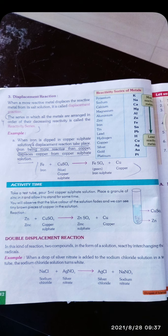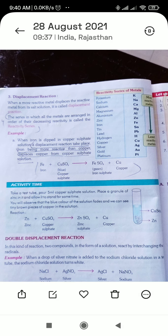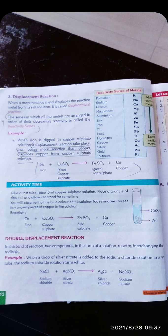par least reactivity mein aate hain. Almost yeh kisi tarike se reaction nahi karte hain. To definition form mein, a series in which all the metals are arranged in order of their descending reactivity is called the reactivity series. Last topic aap ka aata hai, use kehte hain double